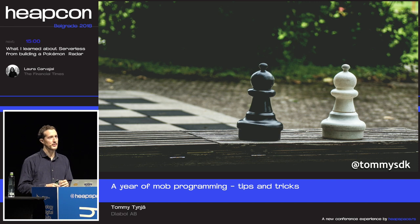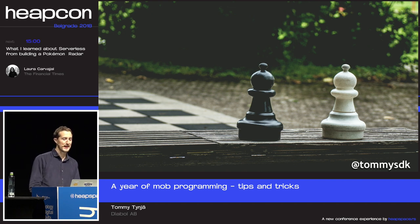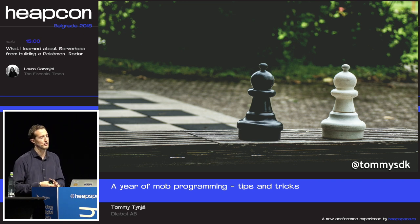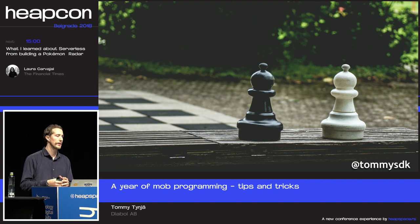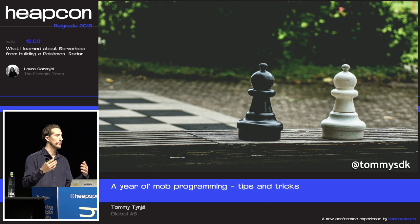A common question I get: how many people should be in a mob? Is there a silver bullet? Unfortunately, there's no single answer — it depends on context. In our case we typically had five to seven developers. Five felt like the sweet spot for us; at seven we felt a bit too many, so we'd usually split into a mob and a pair — though the mob was typically more productive. In the morning stand-up we'd decide who works on what.